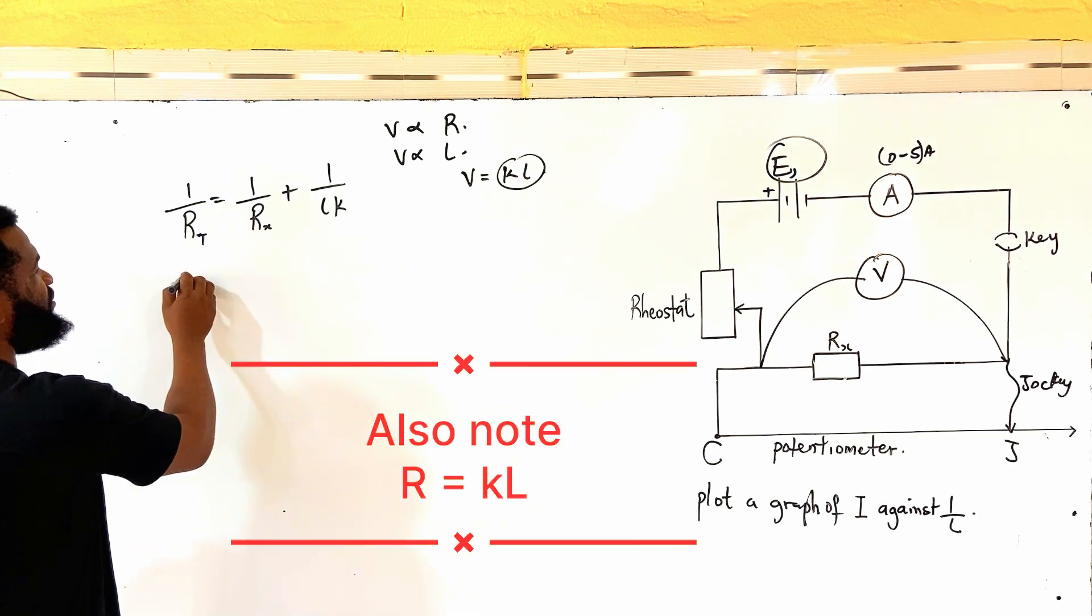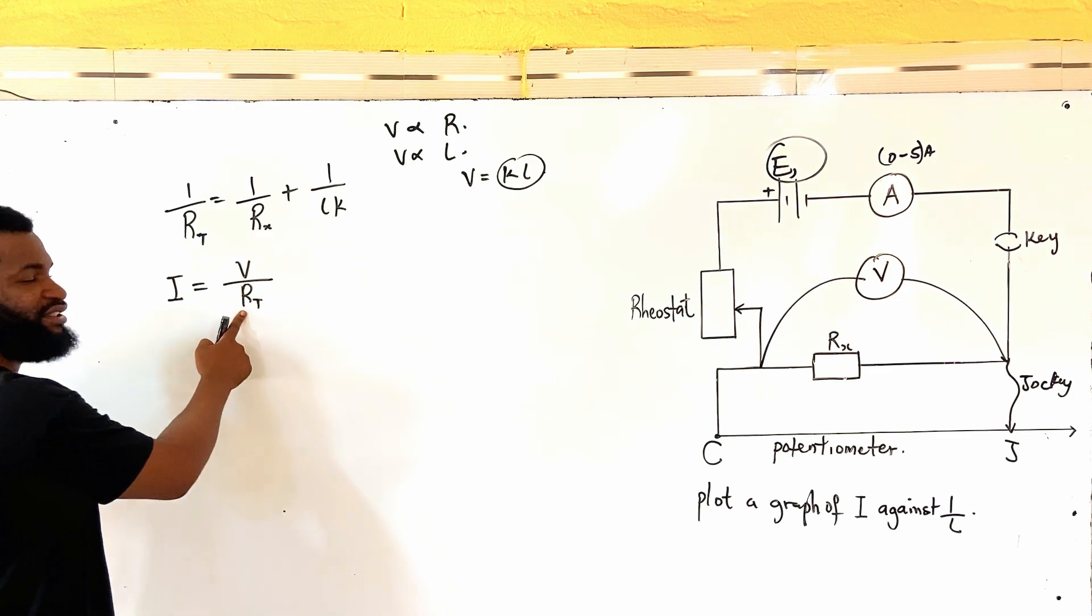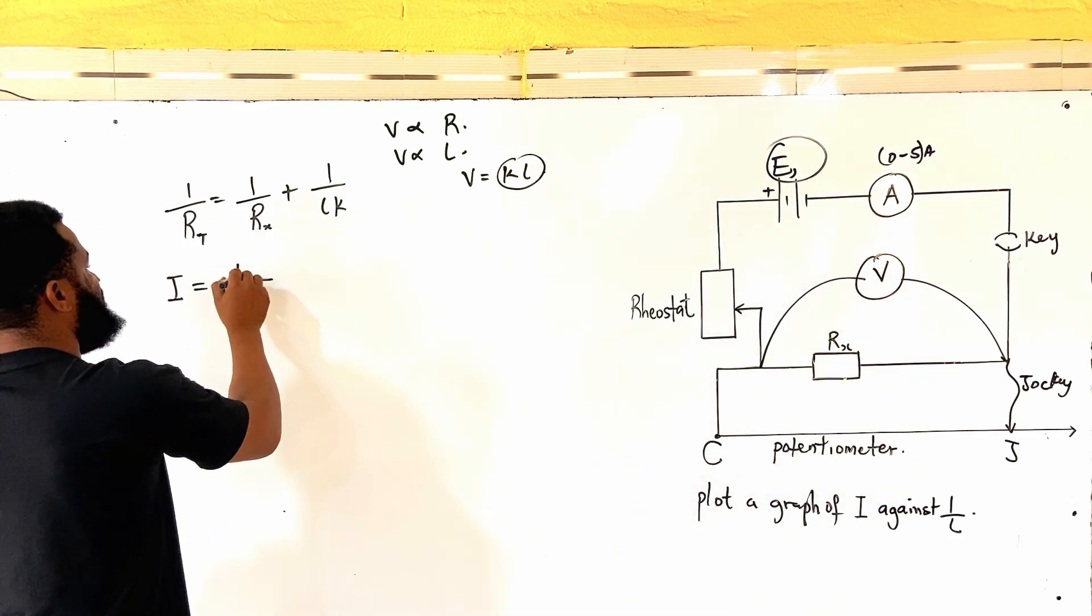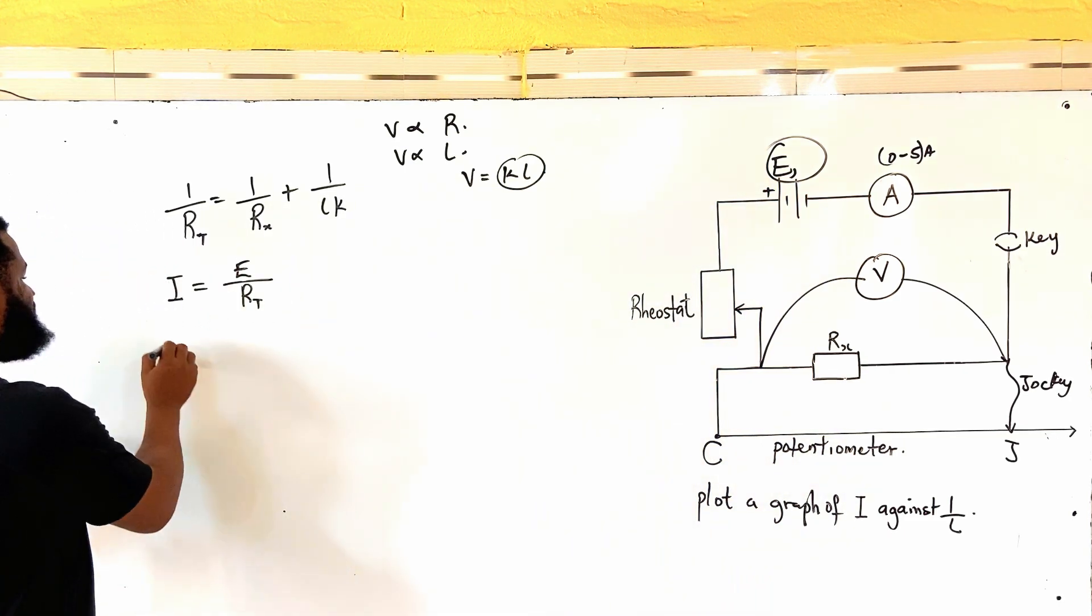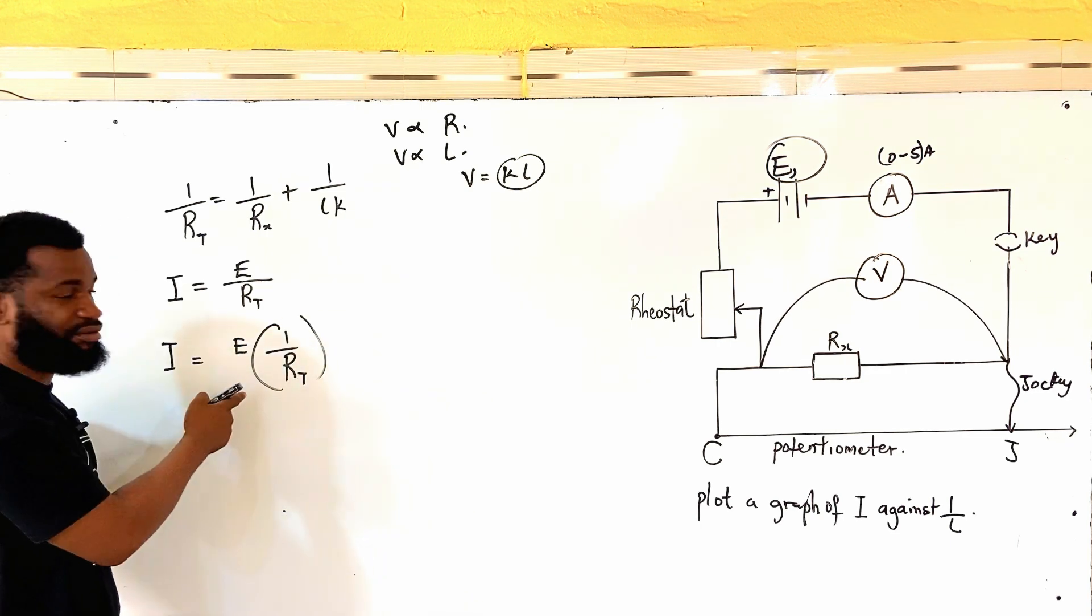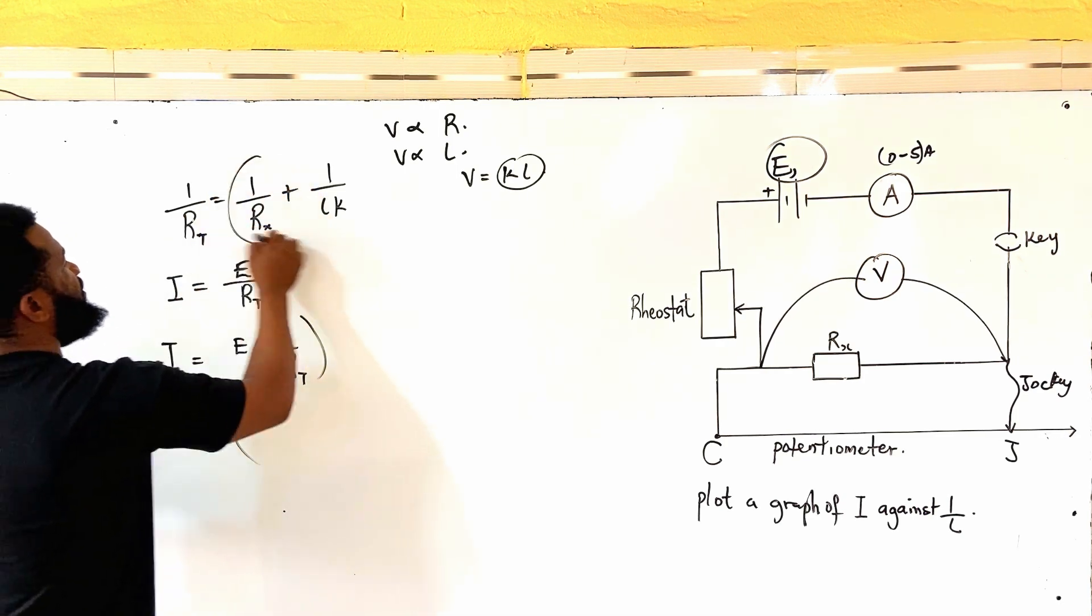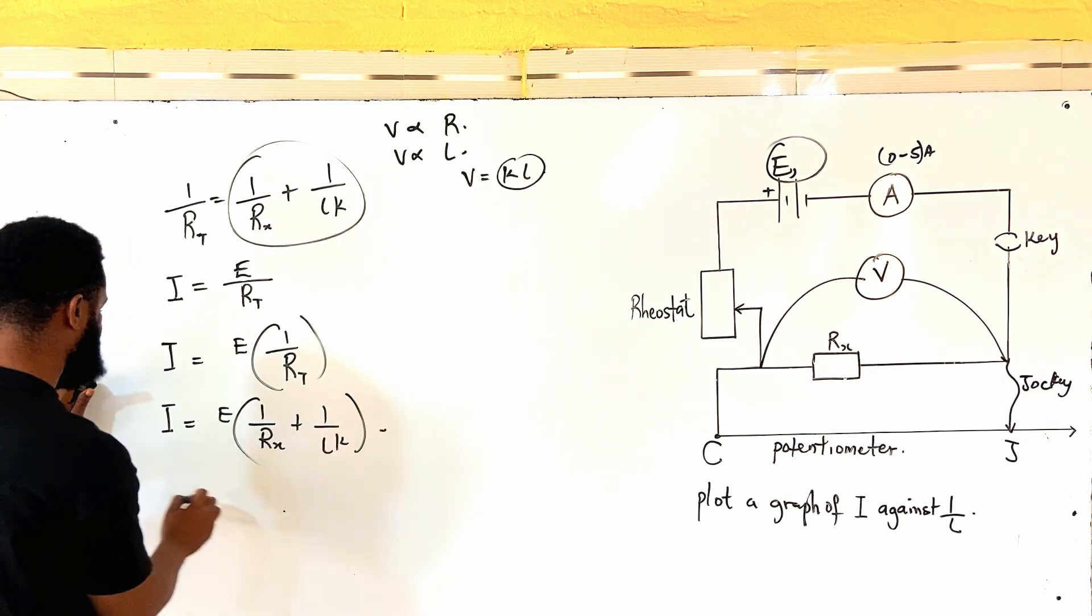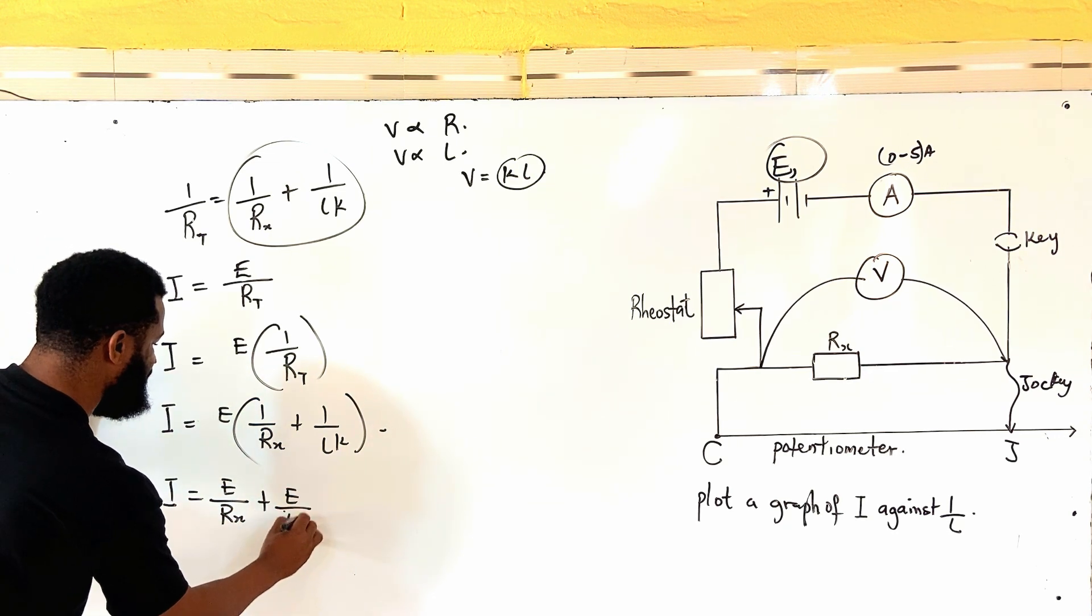So, in this case, I am going to say that current is equal to V all over RT. That is total resistance. V is the voltage of the, I can also call it E. Let me use E because I already have V there. So, this is the battery, the voltage of the battery or the EMF. So, I will have that I is equal to E bracket 1 over R sub T. So, therefore, current is equal to E bracket 1 over R sub L R plus 1 over LK. So, current is going to be equal to E all over R sub X plus E all over LK.